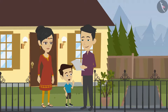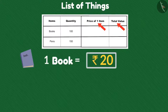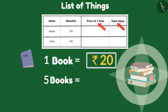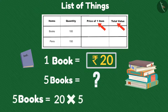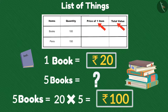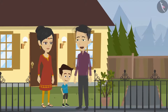How is that, dad? Suppose one book costs rupees 20 and I want to buy five in total, then how much money is required to buy the books? 20 multiplied by 5 — that is 100 rupees. Oh wow, dad! Come on, let us go and buy things and see how much money we really need.